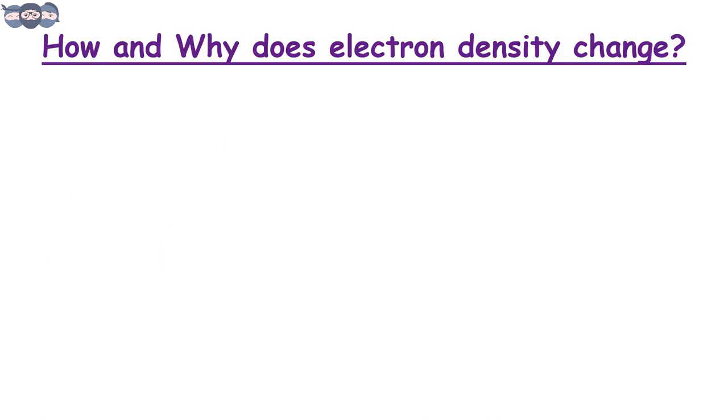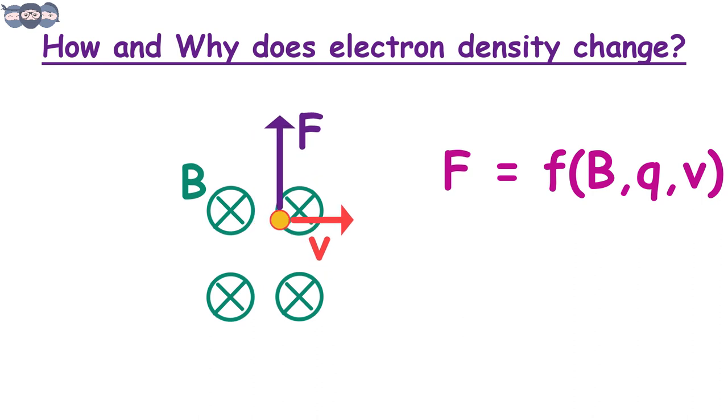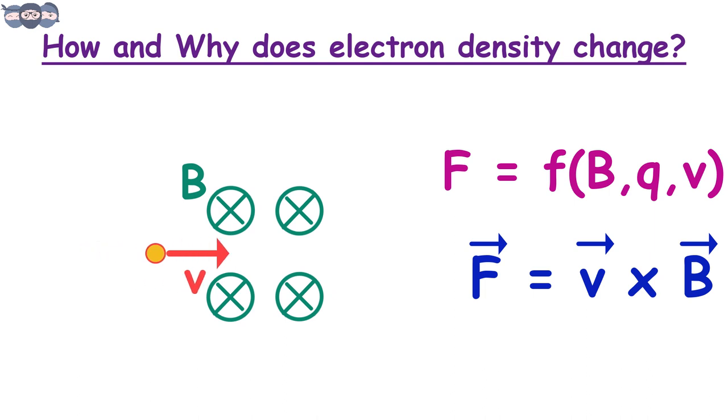Now, let us understand how and why the electron density changes when magnetic field is applied. A moving electric charge experiences a force when it is present in the magnetic field. The magnitude of this force is dependent on the magnetic field, charge, and the speed. The direction of this force is perpendicular to both the magnetic field and the velocity of the charged particle.